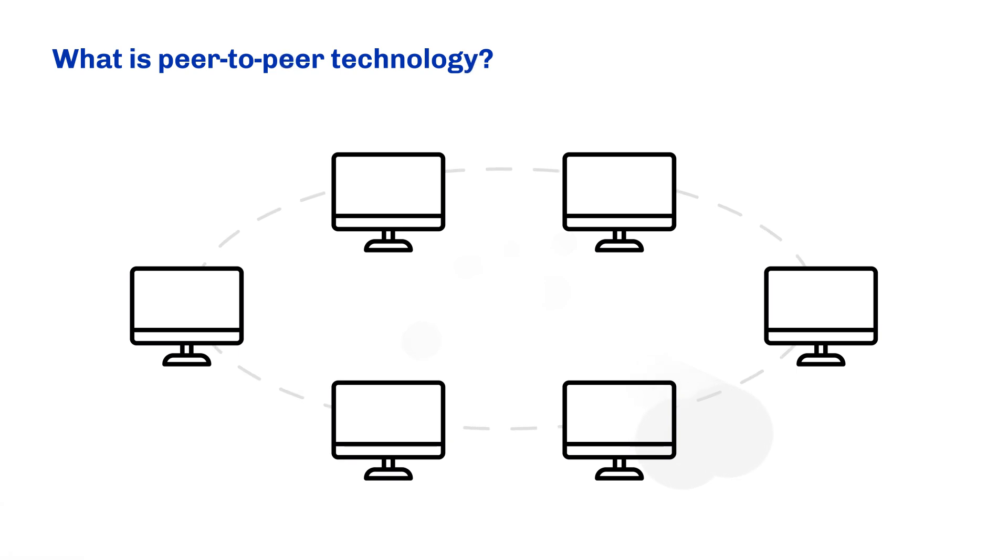Let's start with something very basic. What is the network, first of all? The network consists of many computer systems connected through some wires.